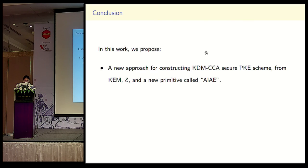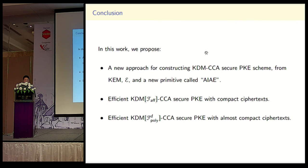This concludes our work. In this work, we propose a new approach for constructing KDM-CCA secure PKE from three building blocks: KEM, E, and our new primitive AI-AE. By designing specific building blocks, we construct efficient KDM-CCA secure PKE for affine functions and for polynomial functions. The ciphertexts of our schemes are compact. Thanks for your attention.